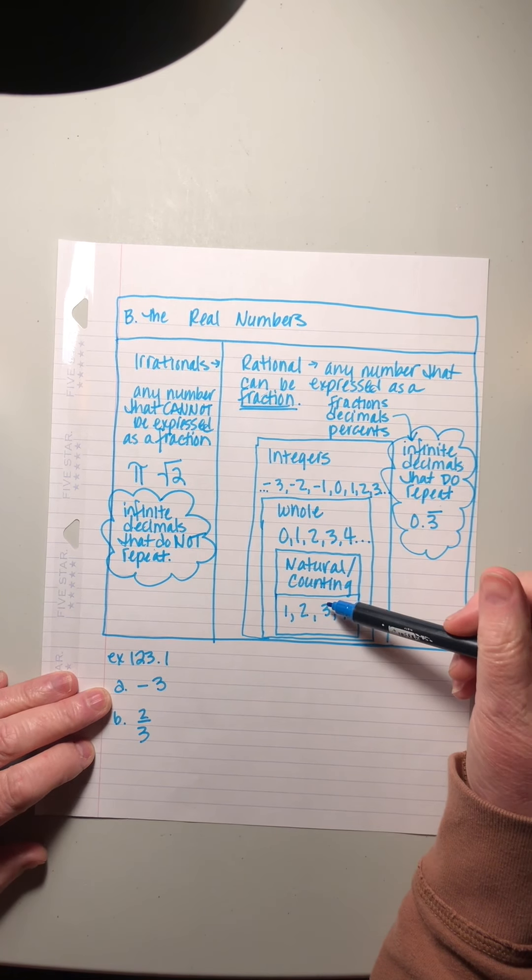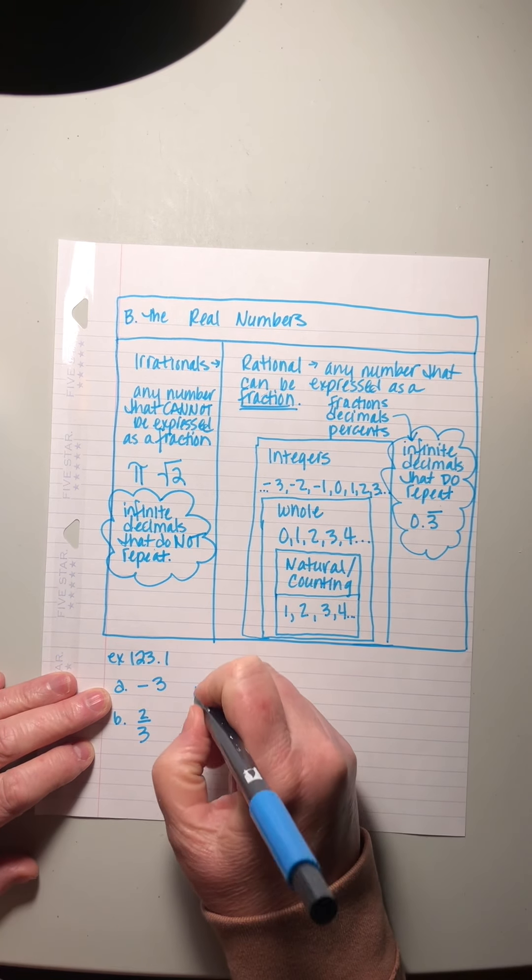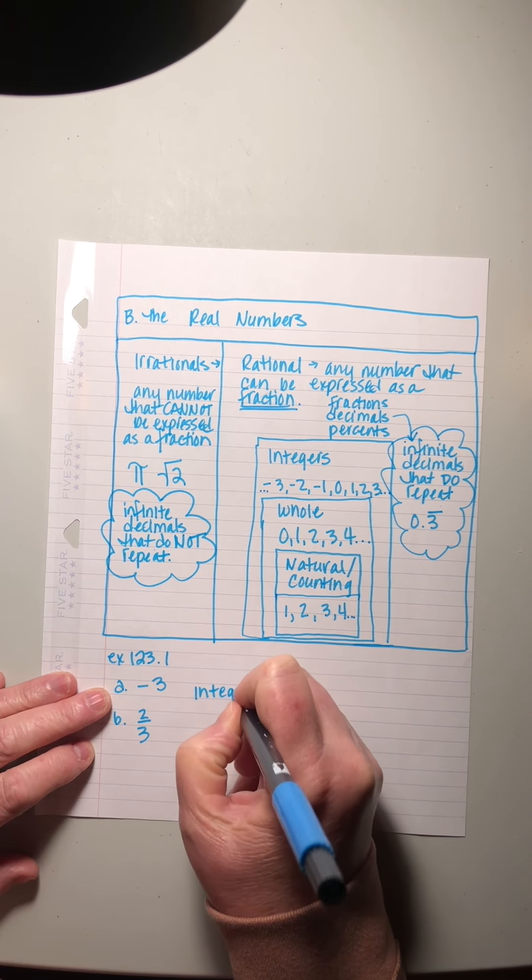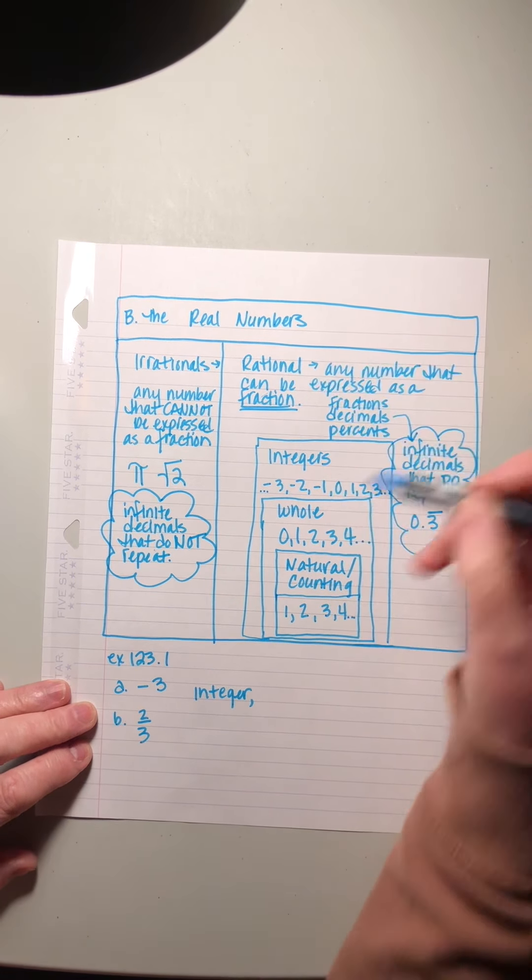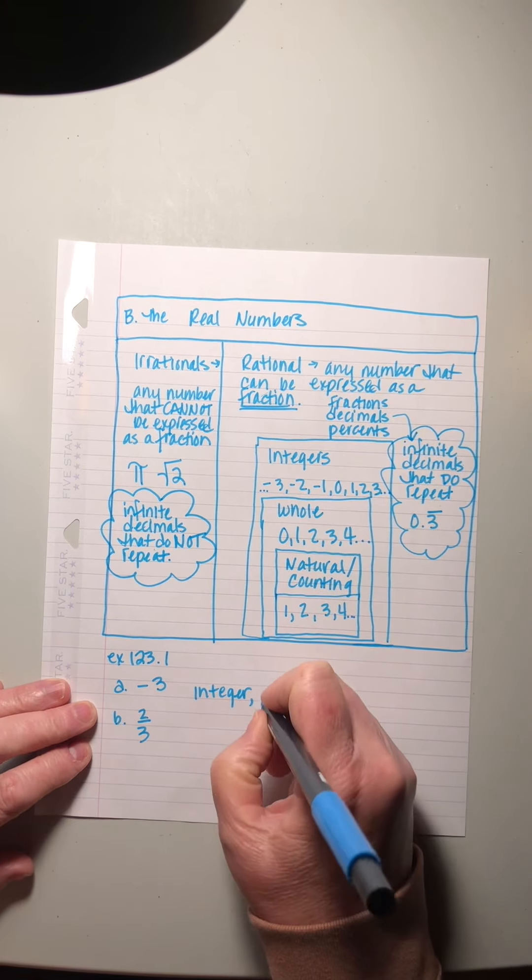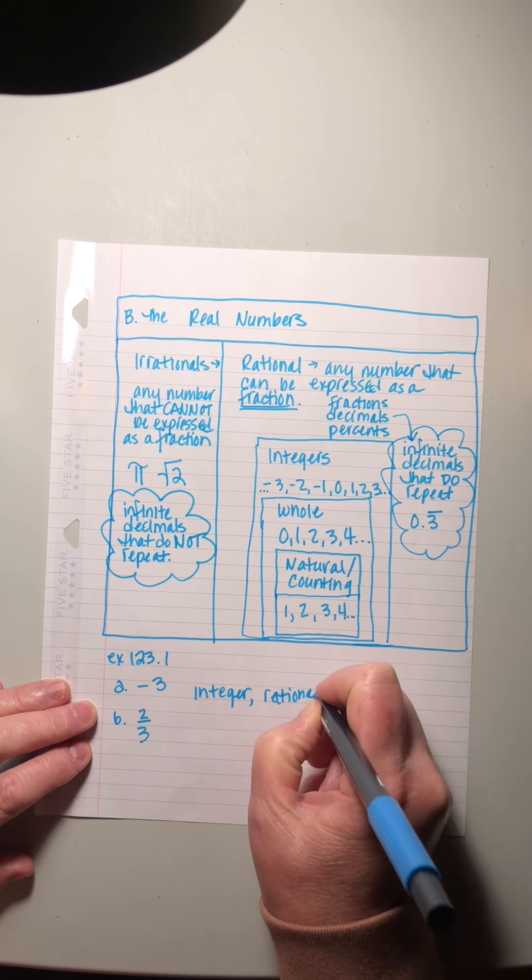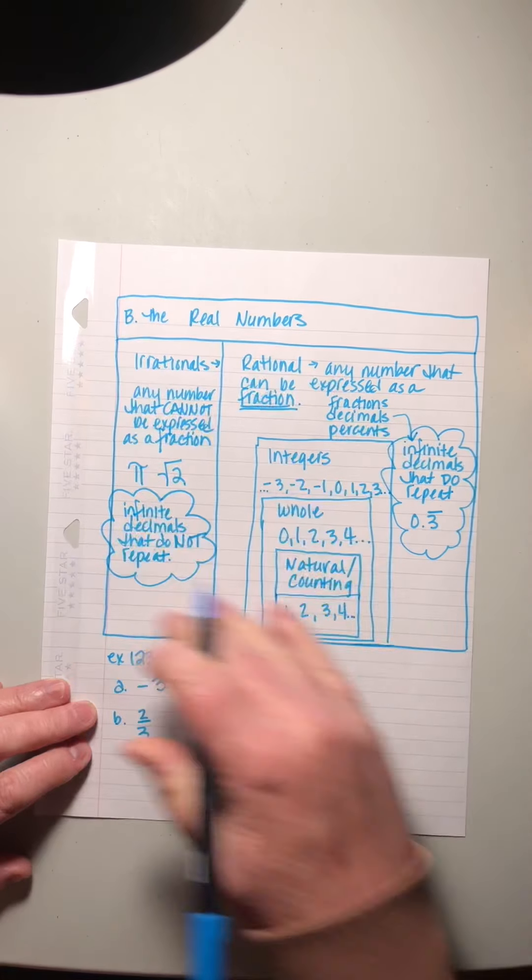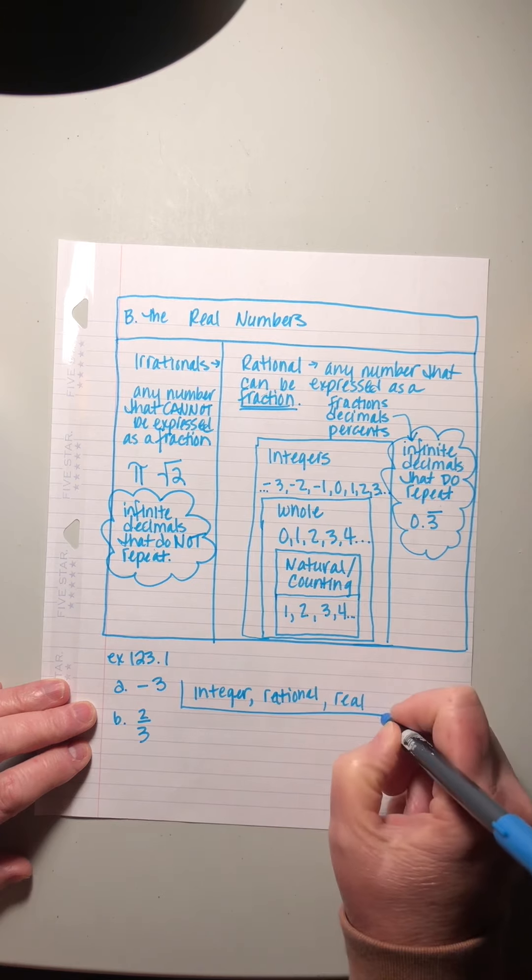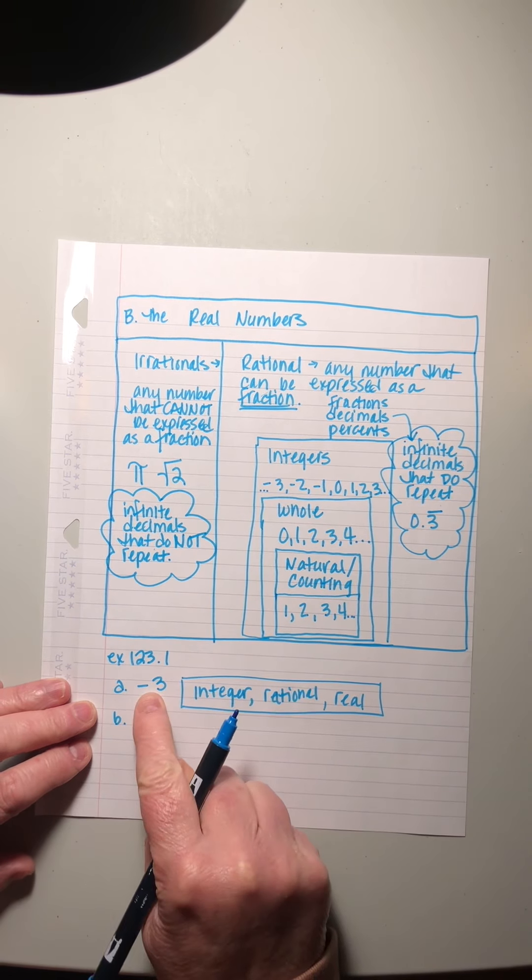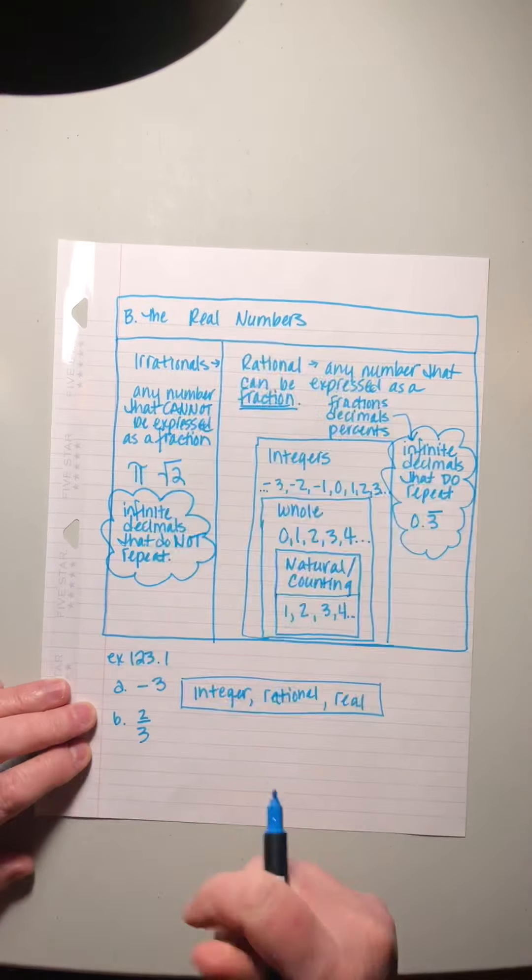It's not a natural or counting number is it? And it's not a whole number, but it is an integer and it is a rational number because it can be written as a fraction, right? Negative three over one. And it's in the whole big category here. So it can also be a real. That's the answer. Negative three is a member of the integers, the rationals and the reals.